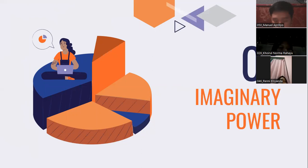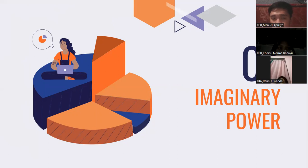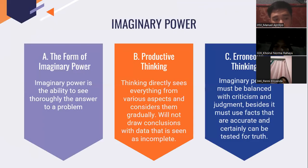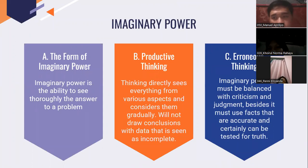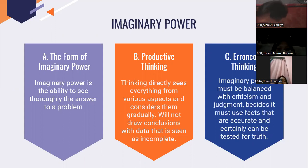Before that, we need to know what this definition means. Point A: the form of imaginary power. Imaginary power is the ability to see beyond to find the answer to a problem. Here we can see from a broad perspective on an issue so that our means are not narrow about that one thing only.